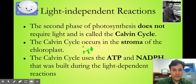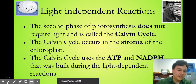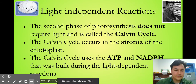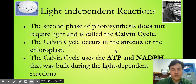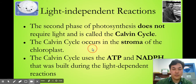The light-independent reactions are the Calvin cycle — they go hand in hand and are named the same. The Calvin cycle does not require light and occurs in the stroma. It's going to use ATP and NADPH to make sugars.